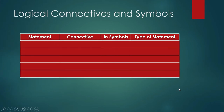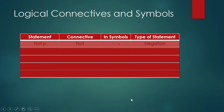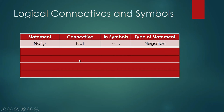Let's go back to those connectives and show what their symbols are and what types of statements go with those symbols. Note that 'not' is not a connective — it is a modifier. If you have a statement p, then 'not p' uses a modifier, and a statement accompanied by this symbol is called a negation.